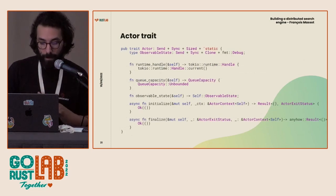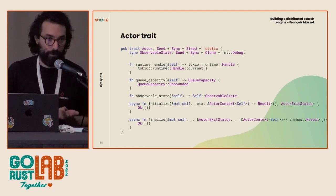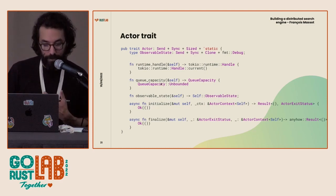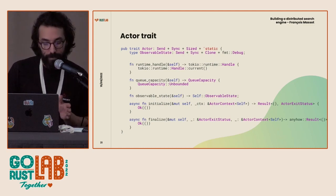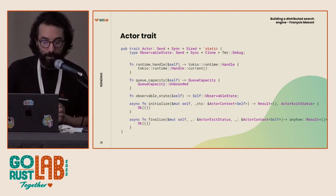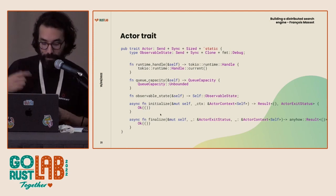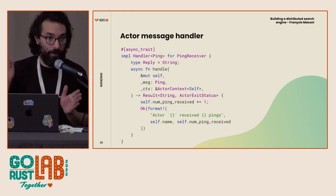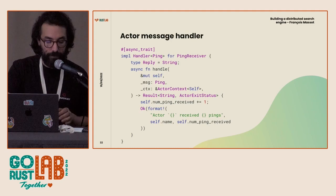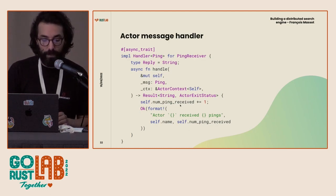Here's the actor trait. When you implement it, you can choose the runtime, choose if it's bounded or unbounded — so with or without back pressure. Observable state is a way to ensure we can observe every actor: you send a specific 'observe' command message and it returns the observable state type. Initialize and finalize are just what you execute when you start and exit. You implement the handler trait, which just has a handle message method. Here we have this 'NumPingReceive' — very practical when you want to test your actor.